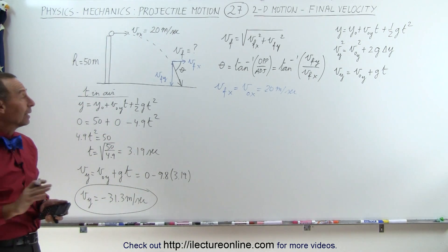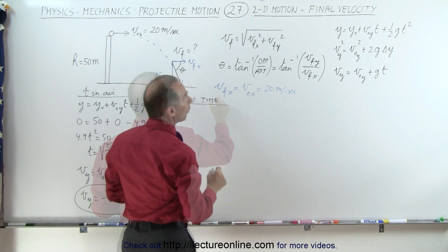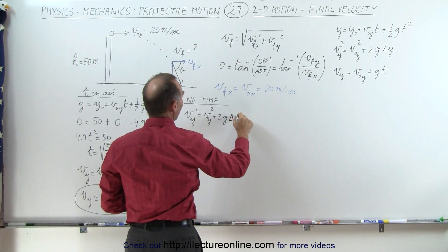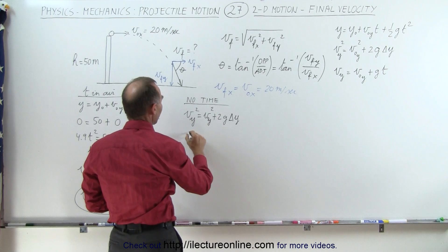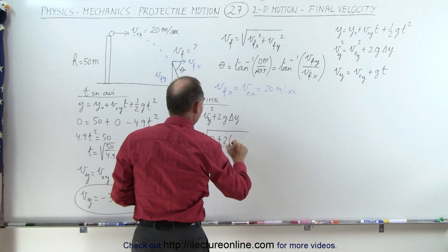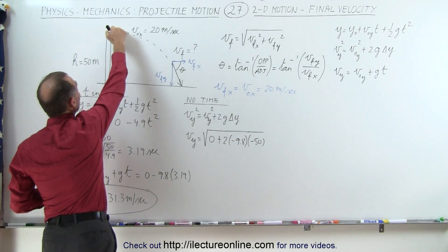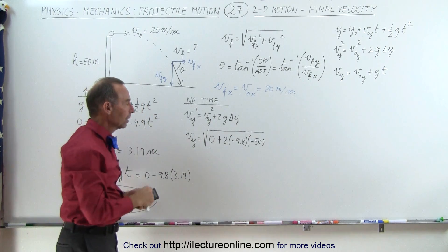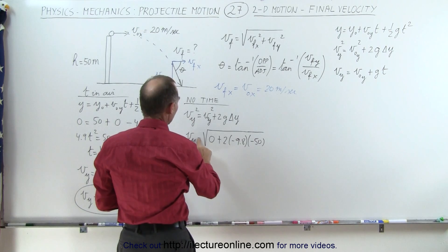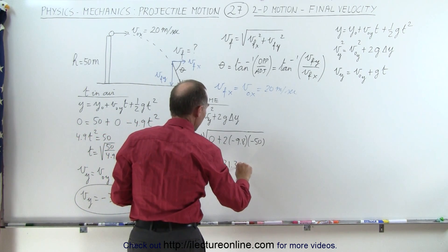You can also solve this without finding the time in the air using v_y² = v_y_initial² + 2g·Δy. The initial velocity in y is 0, and Δy = −50 meters (the height drops from 50 to 0). So v_y = √(0 + 2(−9.8)(−50)) = √980 = 31.3 meters per second, and since the object is coming down, v_y = −31.3 meters per second.